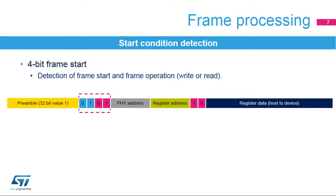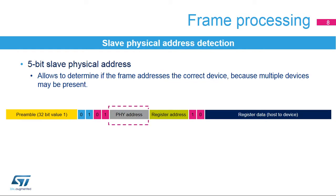A start condition is detected when an MDIO bit is set to 0. Valid start conditions are 0101 for a write frame and 0110 for a read frame. Start condition errors are reported by the SERF bit. The start condition will be processed by the MDIOS only when a valid preamble has been detected or when preamble detection has been disabled. The physical address allows frames to be sent to different devices on the same MDIO bus. The MDIO device slave address is programmed in the MDIOS port address register. When a frame with a matching physical address is received, it will be further processed by the device. Frames with a different physical address are discarded. The physical address will only be processed by the MDIOS when a valid start condition has been detected.